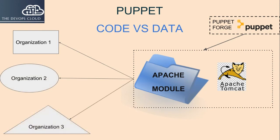The official Puppet Apache module itself represents the code, or the generic and reusable aspect of the configuration, as any good component module would. The profile contains the organizational, or site-specific, data that is fed to the component module, or code, when that module is used. This separation helps to create more reusable code.